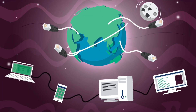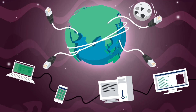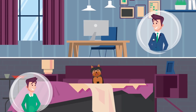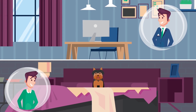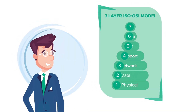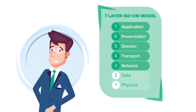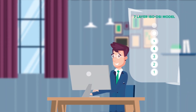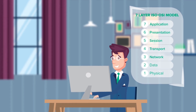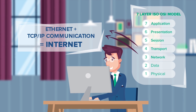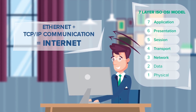Ethernet is the most widely used communication medium in the world to transmit data between devices. Ethernet is everywhere. You may be familiar with it from your home or office. It resides on layers 1 and 2 of the ISO OSI model, which generically describes the different abstraction layers in a communication system. Ethernet together with TCP/IP communication forms the basis of the Internet we all use every day.